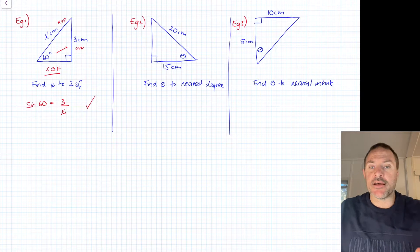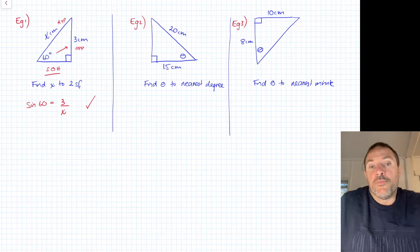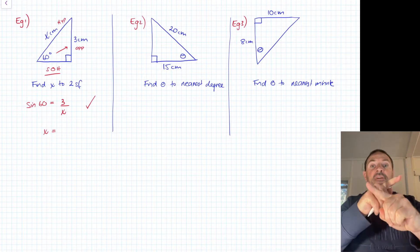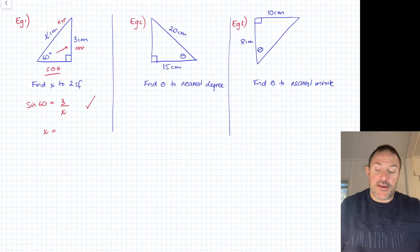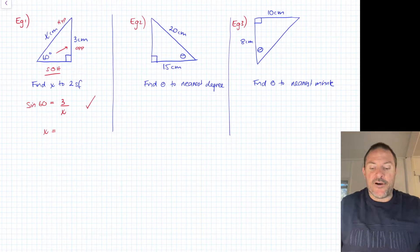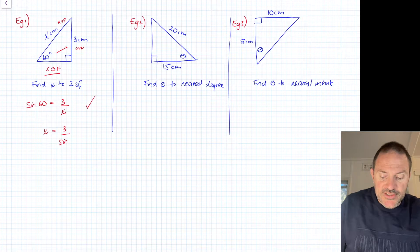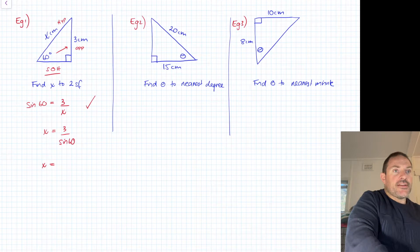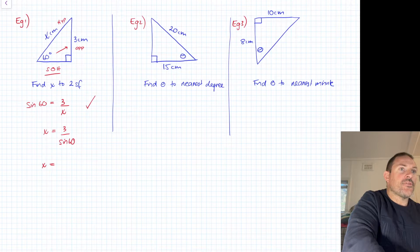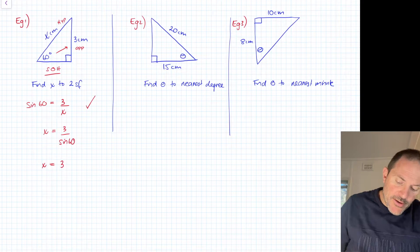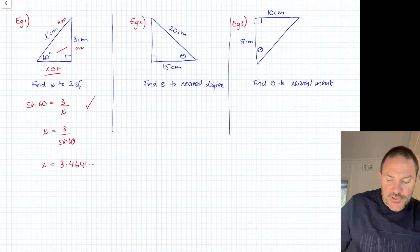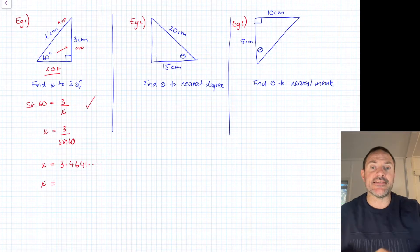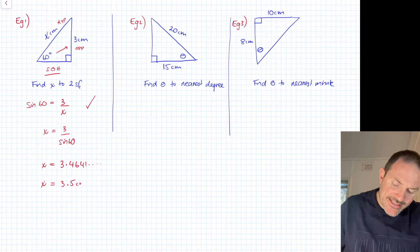My first step is to write sine 60 equals my opposite of 3 over my hypotenuse of x. I don't want to see you skipping that step. You might remember that these two things can simply swap because the denominator is the variable. If you're not sure, times the x across and then divide by the sine 60. Either way, that's what you should see.